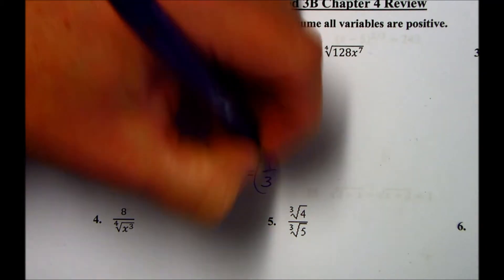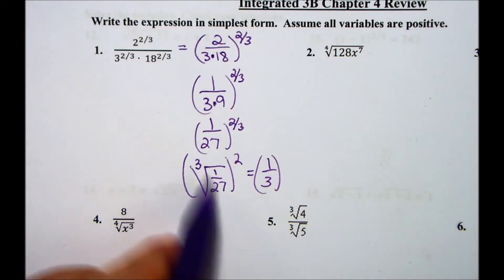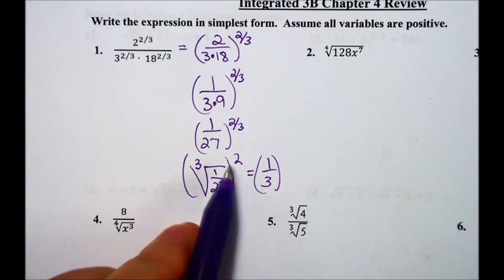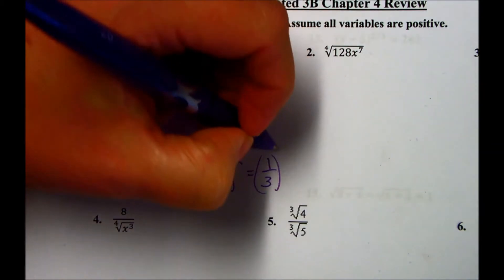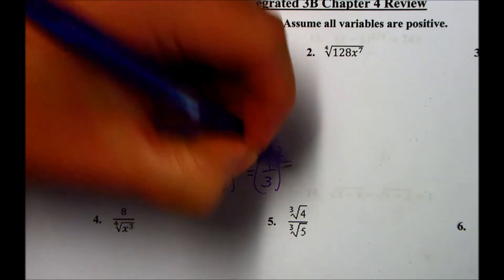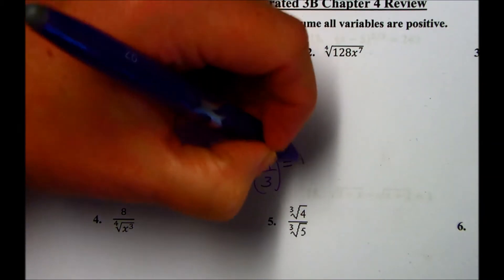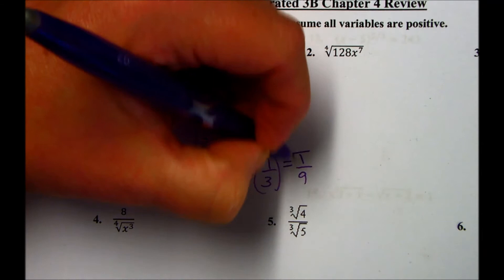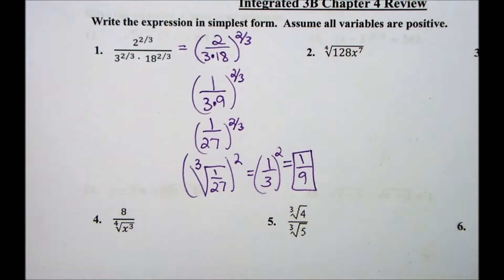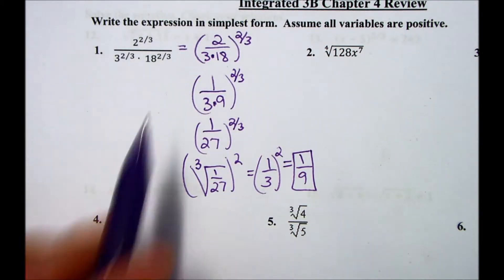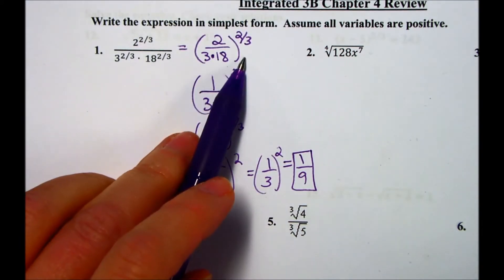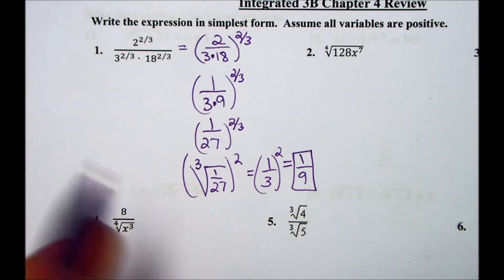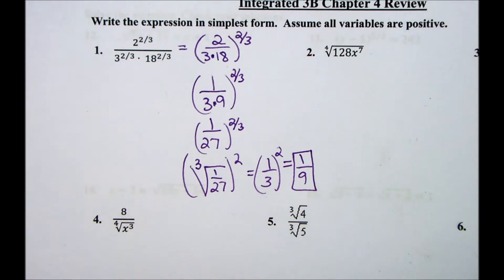The cubed root of 1/27 is 1/3, and then you can square that. 1 squared is 1, 3 squared is 9, and that is your answer. Because it was an odd root, we don't have a plus or minus to worry about. When you're simplifying, you're not going to have a plus or minus even if it's an even root.